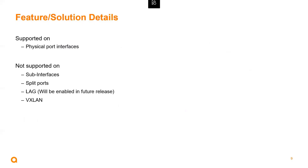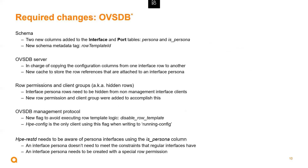Looking at the details: this feature is supported only on physical port interfaces. It's not supported on sub-interfaces, split ports, LAGs, or VXLAN at the moment. There were a number of changes to the OVSDB database schema — we had to create a couple of new columns and a new meta tag. The OVSDB server is in charge of copying configuration columns from one interface row to another, and a new cache was created to store those references. Interface persona rows need to be hidden from non-management interface clients, and a new flag was created — disable_row_template — to avoid executing template logic.